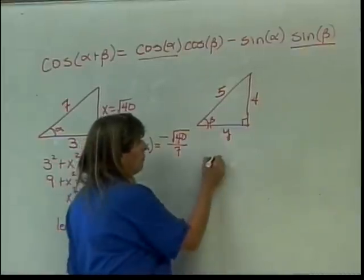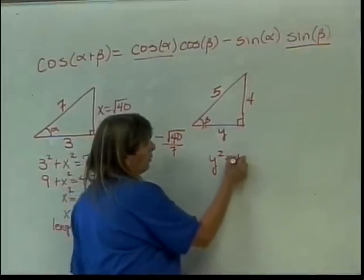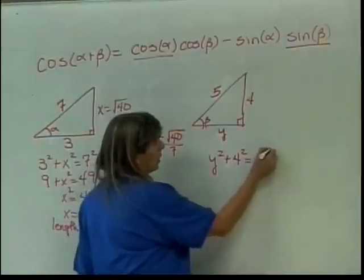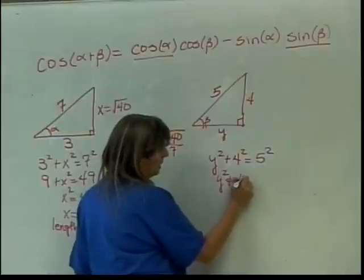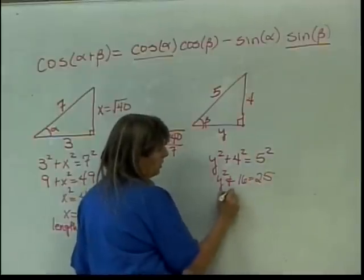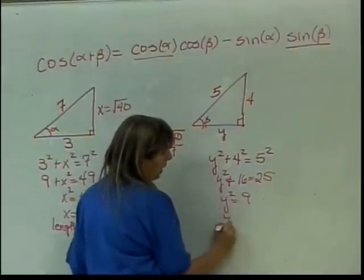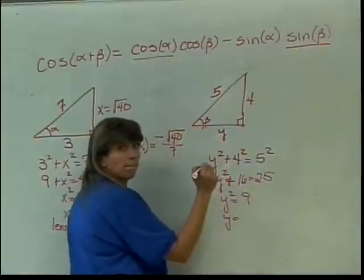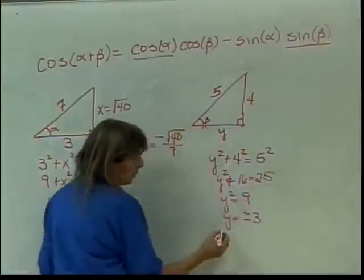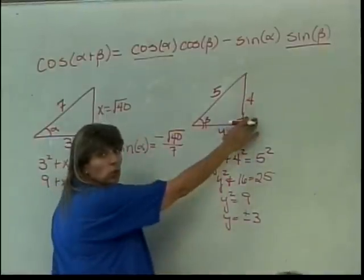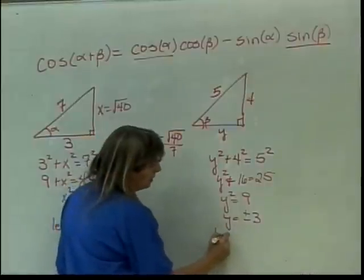So now I have y squared plus 4 squared equals 5 squared. This gives me y squared plus 16 equals 25. Y squared equals 9. So y equals plus or minus the square root of 9, which is 3. We're dealing with a triangle, so what do we say? Length is positive.